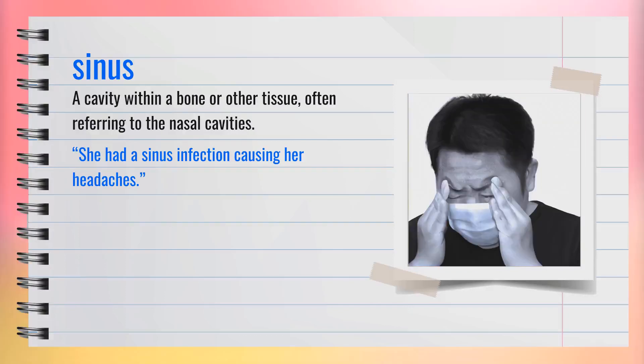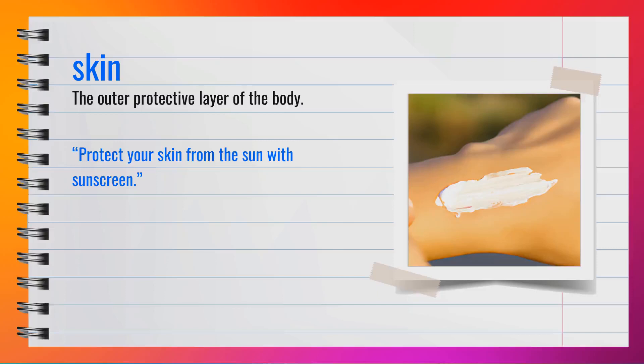The word sinus is a noun, spelled S-I-N-U-S, pronounced 'sinus.' A synonym could be cavity. For example, she had a sinus infection causing her headaches. A sinus is a cavity within a bone or other tissue, often referring to the nasal cavities.